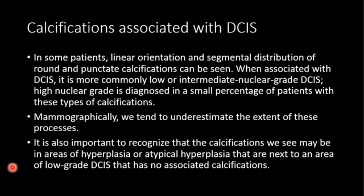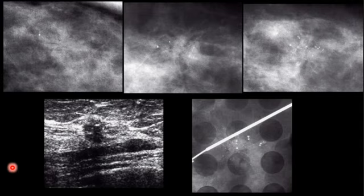Most of the time, mammography underestimates the size of the tumor. The calcification area on mammography might be only a few millimeters, but the malignant area can be much larger. You cannot judge the size of the tumor based on the calcification — for example, if calcification spans five millimeters on mammography, the tumor might be larger.